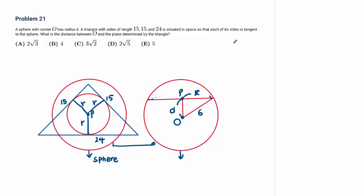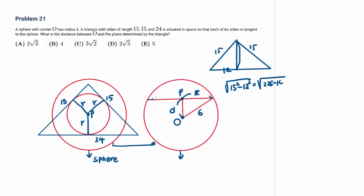The triangle has sides 15, 15, 24. Half the base is 12. The height equals the square root of 15 squared minus 12 squared: 225 minus 144 equals square root of 81, which is 9. We can also recognize the 9-12-15 Pythagorean triple. So the area of the triangle is 24 times 9 divided by 2.